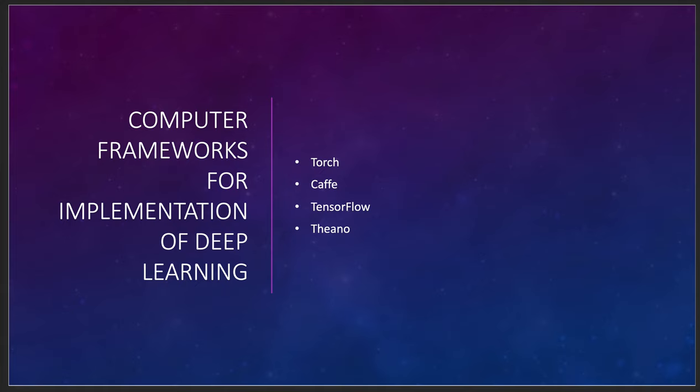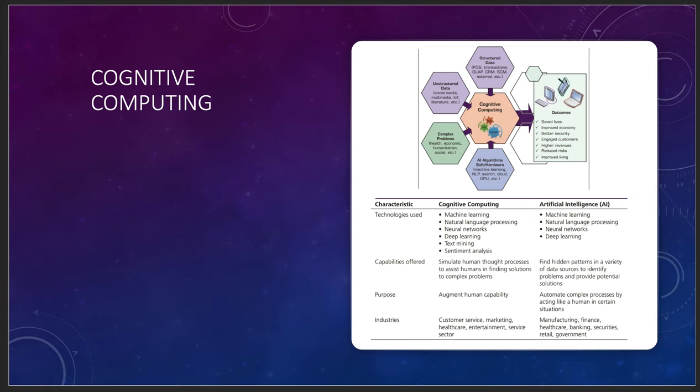Then cognitive computing. I really like cognitive computing because of the way it ties a bunch of technologies together. It's taking together machine learning, natural language processing, neural networks, deep learning, text mining, sentiment analysis. Go back to my Yelp reviews from my hotel. It really does offer some really interesting capabilities, especially when it comes to trying to simulate or make a simulation of human thought processes that basically assist humans in finding solutions.